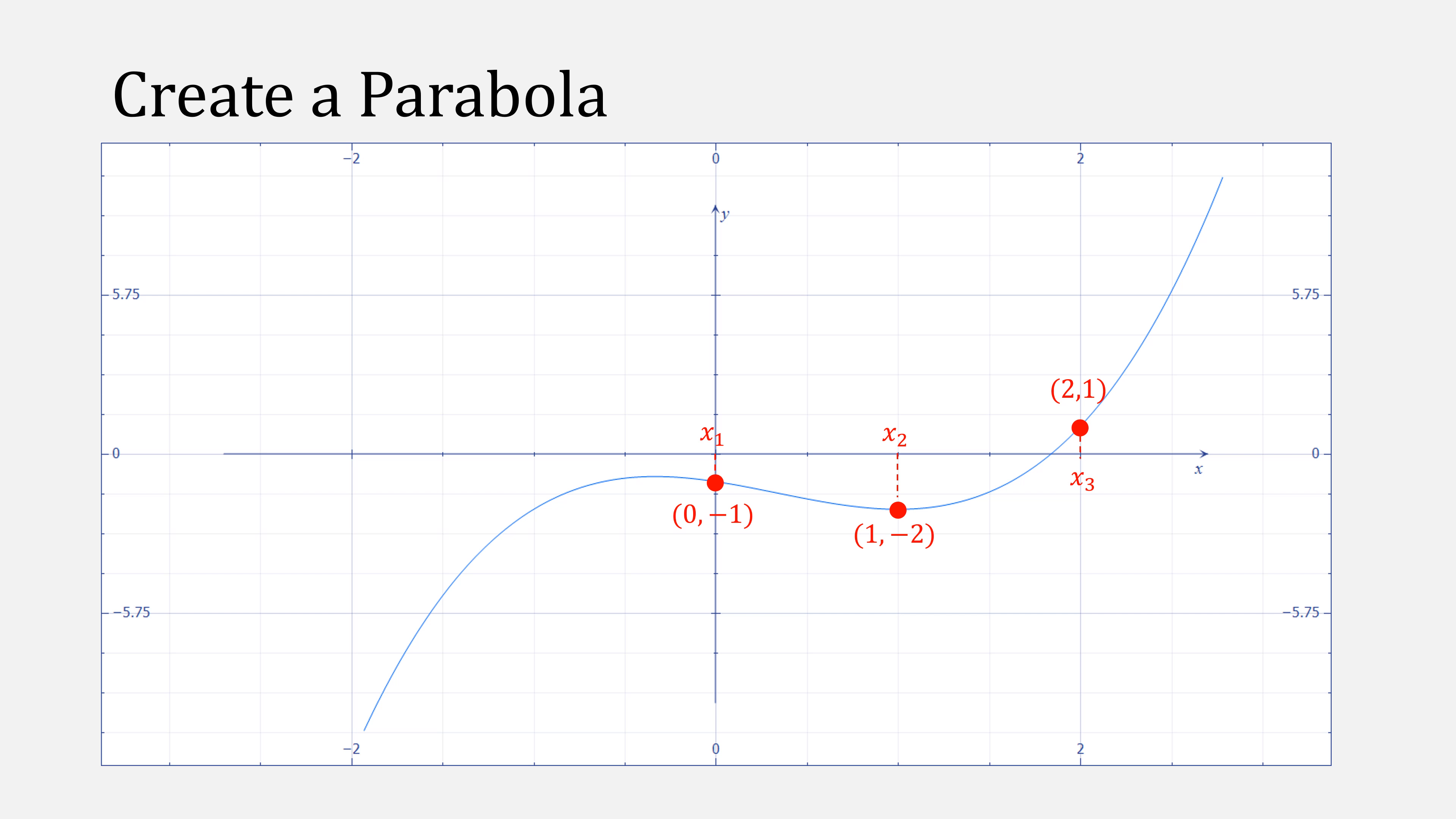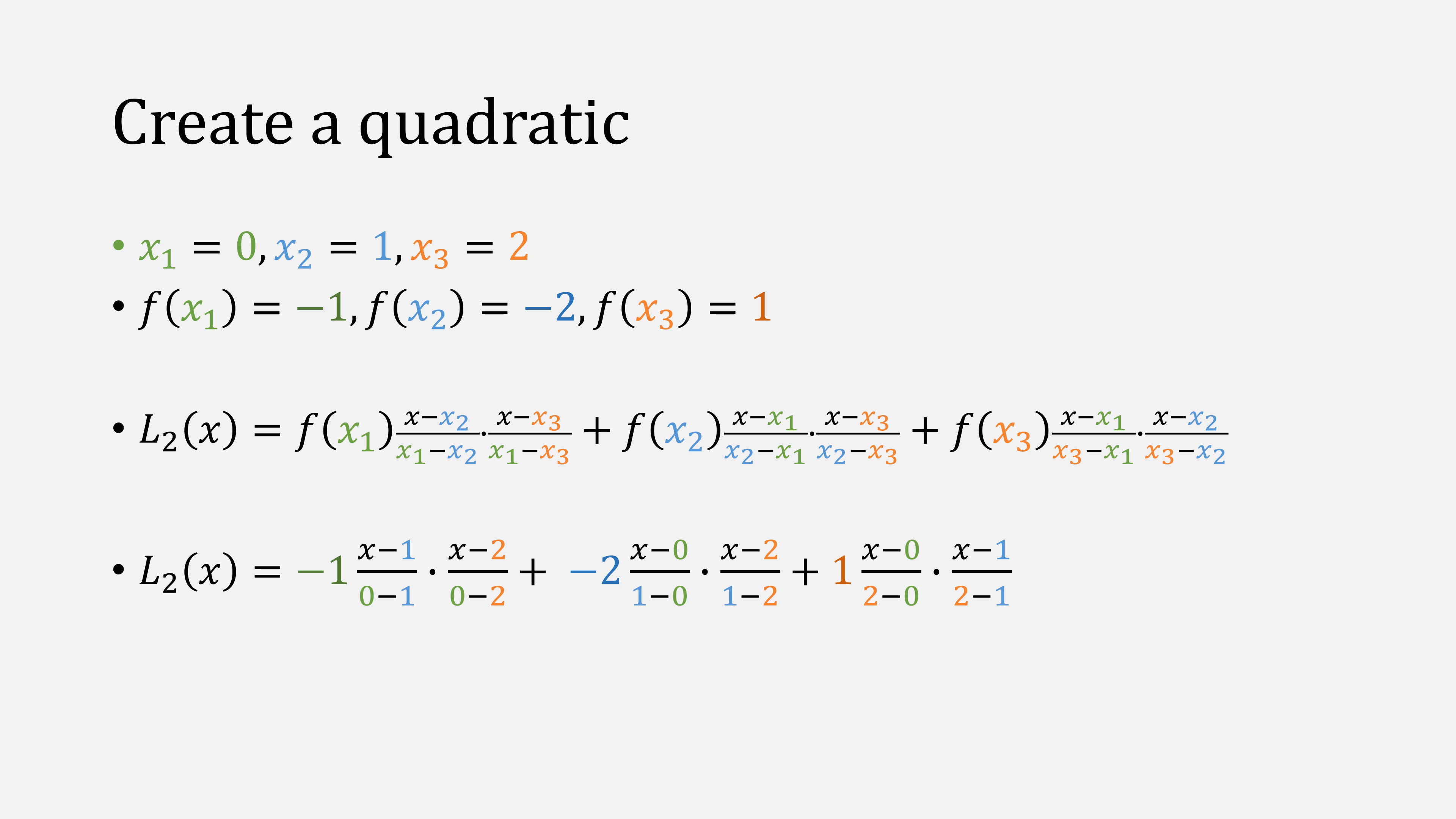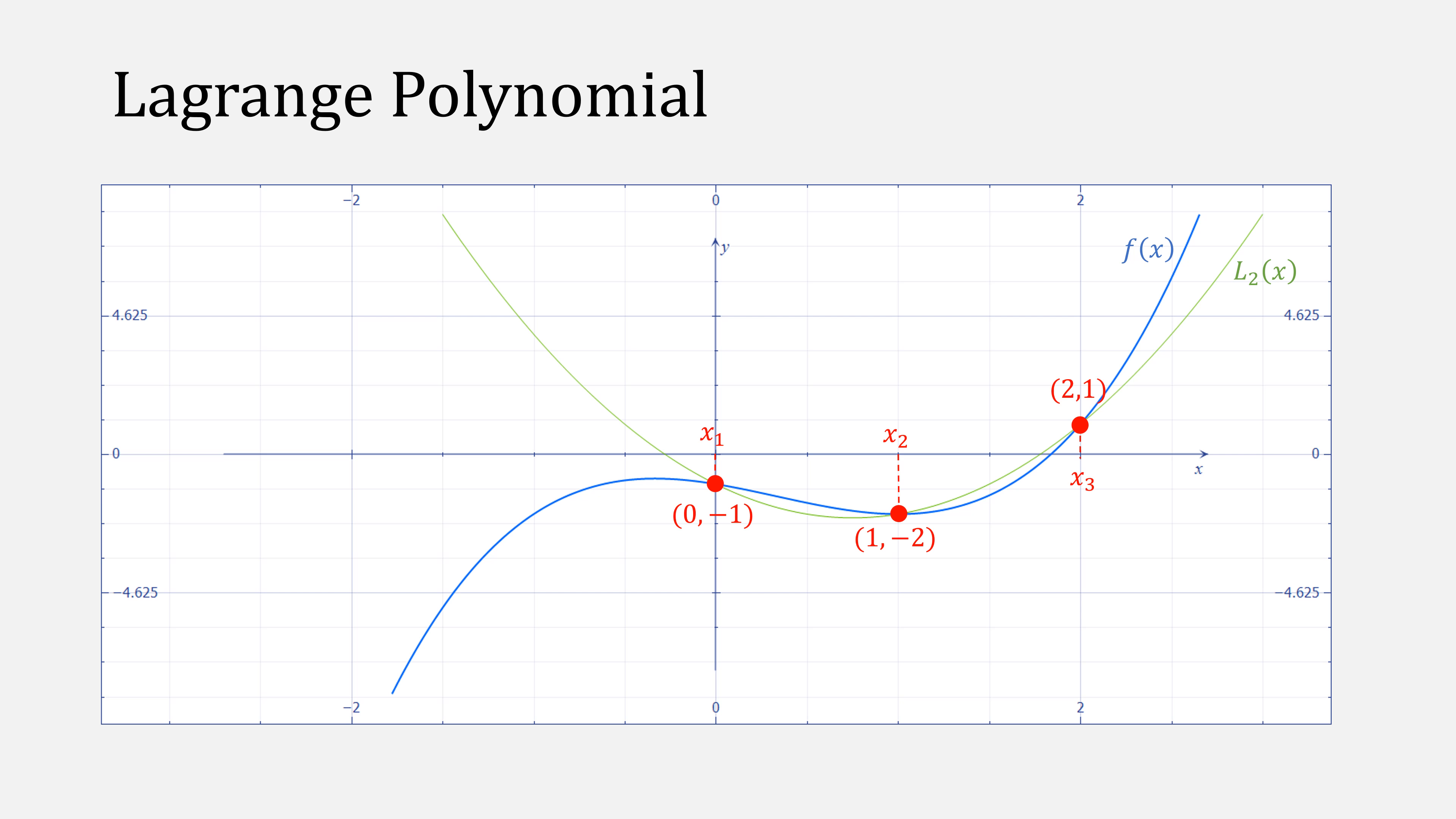Let's try to create a parabola that goes through these points. To create a parabola, we need three points, and we'll use the points 0, 1, and 2. We also need the function at those points, and we'll simply plug them in. Then we use the Lagrange polynomial, I recommend watching my video on Lagrange polynomials, and simply plug our values into it. We simplify and come up with this equation, 2x squared minus 3x minus 1. That function looks like this, and it goes to the same points that we started with.